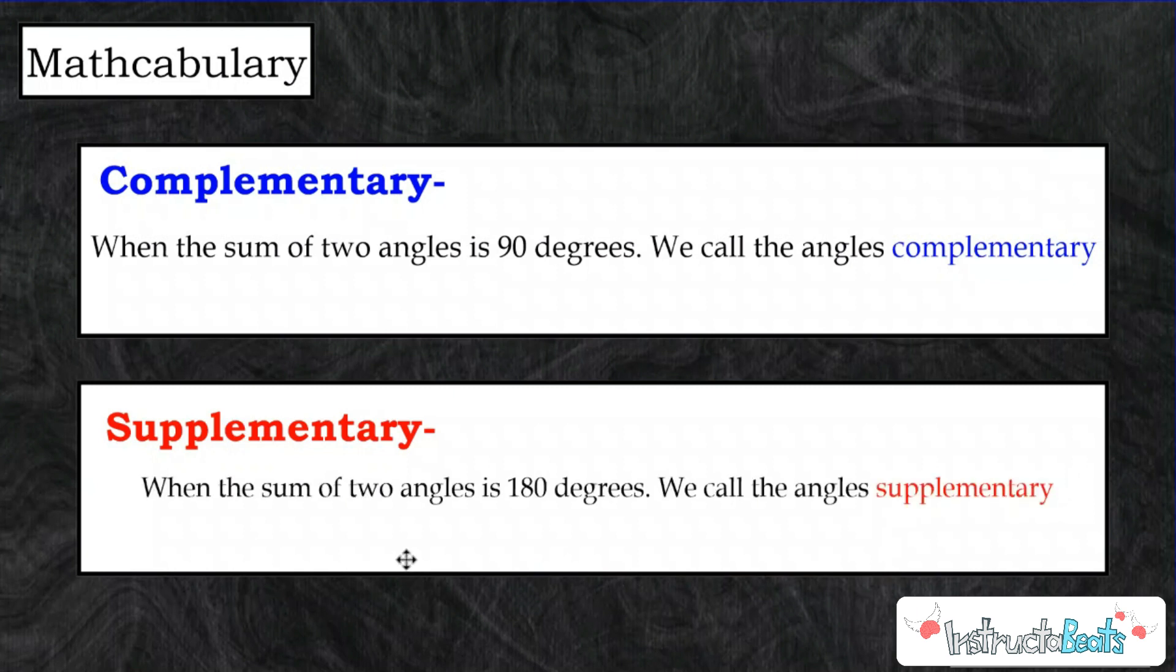Supplementary is when the sum of two angles is 180 degrees. In other words, a straight angle. We call those angles supplementary. A lot of times we get these two things confused. So supplementary starts with an S and straight starts with an S. And a straight angle and supplementary angles both equal 180 degrees. So if you think about the S, that might help you. And then if supplementary is 180, that means complementary would have to be 90. Process of elimination there.